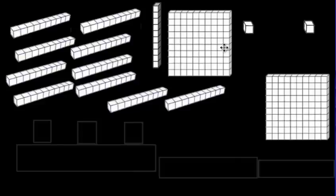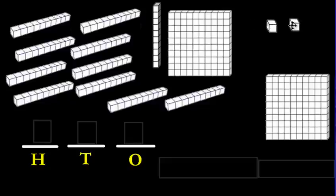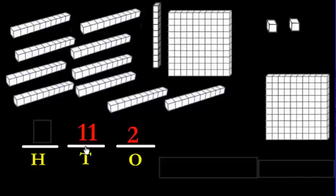Now you can probably do this next one. Remember step one: make the HTO blanks. Now let's count the blocks. How many ones do you see? I see two units, so put two. How about the tens? We've got one, two, three, four, five, six, seven, eight, nine, ten, eleven — so we'll put eleven, right? But that's not right.